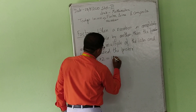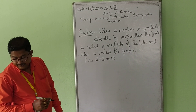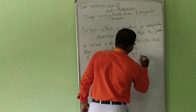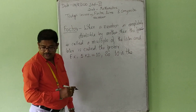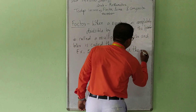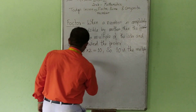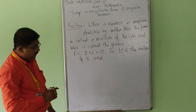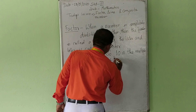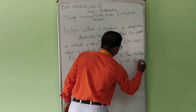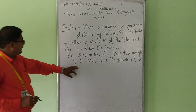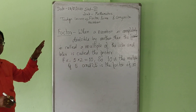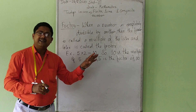Again, what is factor? When a number is completely divisible by another, then the former is called a multiple of the latter and the latter is called the factor. For example, 5 into 2 equals 10. So 10 is the multiple of 5, and 5 is the factor of 10. One number is divisible by another number, then the other is called a factor of the former.